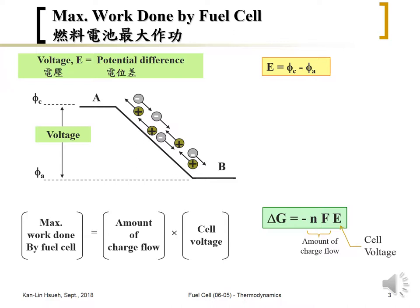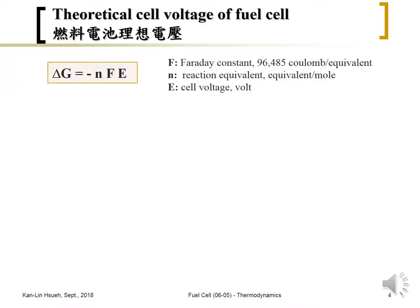This depends on the different kind of fuel — it will give a different amount of cell voltage or ΔG, which we can calculate. So the equation is: ΔG = -nFE. The N is the number of equivalents or moles of electrons per mole of fuel — meaning for one mole of fuel undergoing the electrochemical reaction of the fuel cell, how many moles of electrons can flow through the external circuit or be generated through the electrochemical reaction.